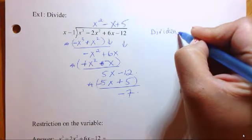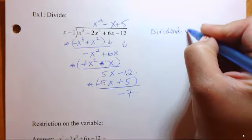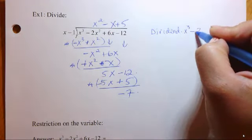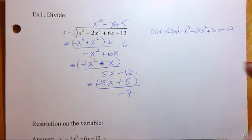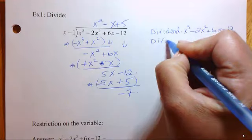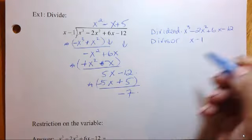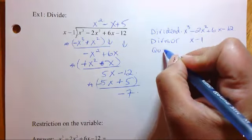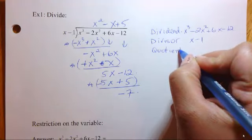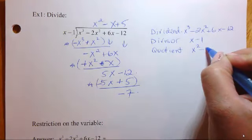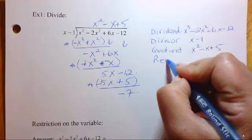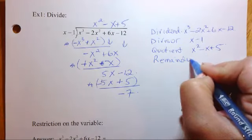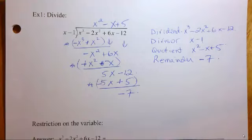the dividend is this polynomial that we start with. Our divisor is our x minus 1. Our quotient is the x squared minus x plus 5. That's our answer. And then our remainder is negative 7.